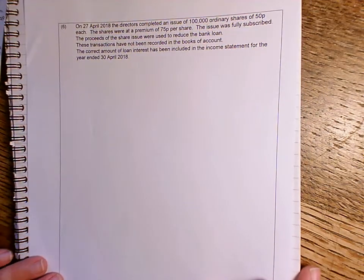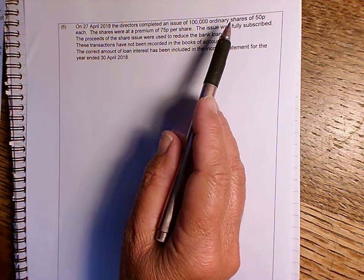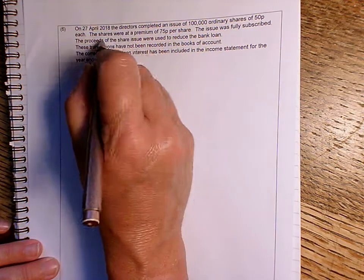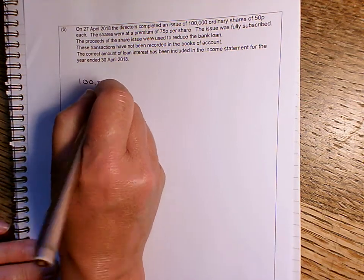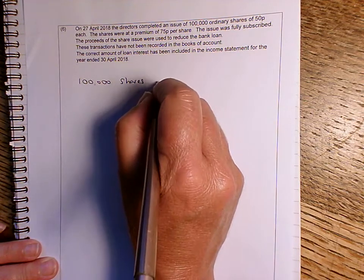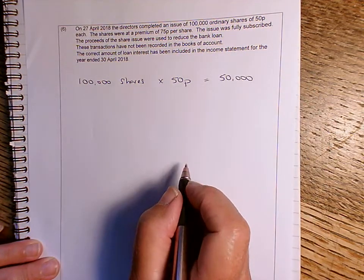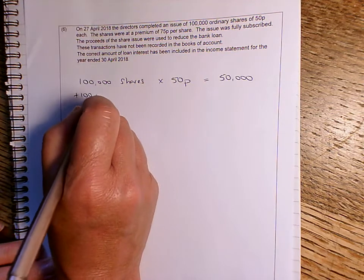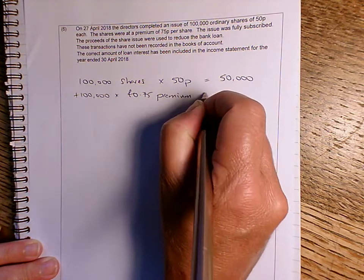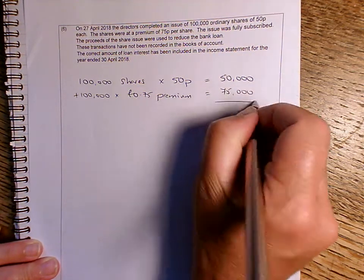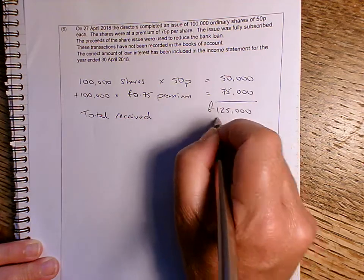One last thing we need to deal with. It tells us that on the 27th of April 2018, the directors completed an issue of 100,000 ordinary shares of 50p each. The shares were at a premium of 75p per share. So we had 100,000 shares, and we sold them for 50p, the ordinary amount. So we've got £50,000 going to ordinary share capital, plus we had 100,000 times the 75p premium. So our share premium is going to go up by £75,000. So the total amount we've received is £125,000.